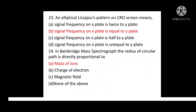Question No. 24: In Bainbridge mass spectrograph, the radius of circular path is directly proportional to? Option A: Mass of ions. Option B: Charge of electron. Option C: Magnetic field. Option D: None of the above. Correct answer is: Mass of ions.